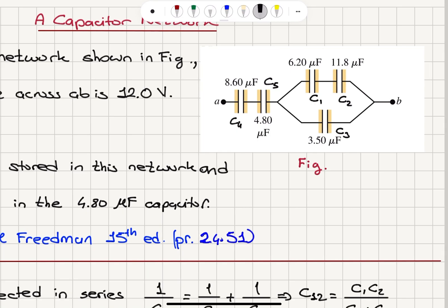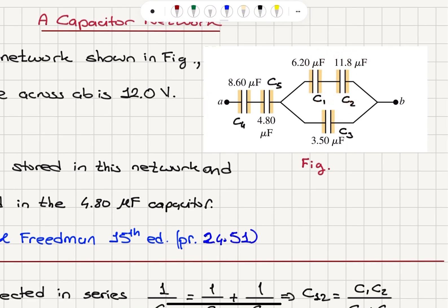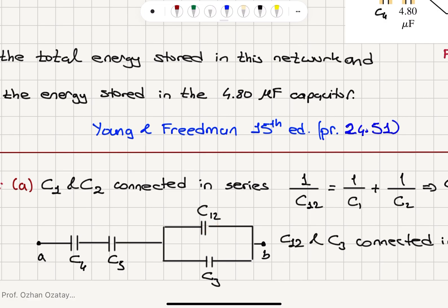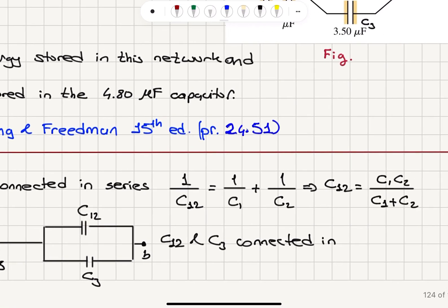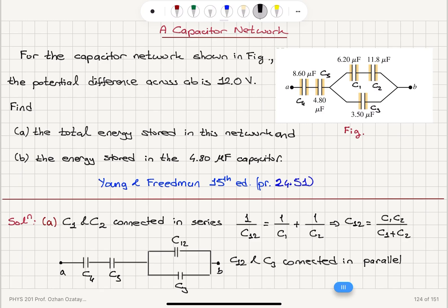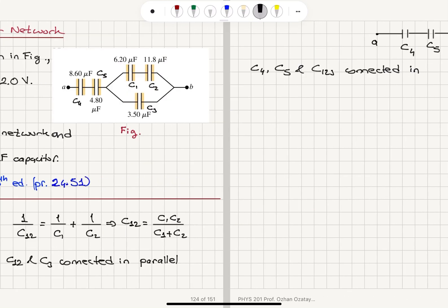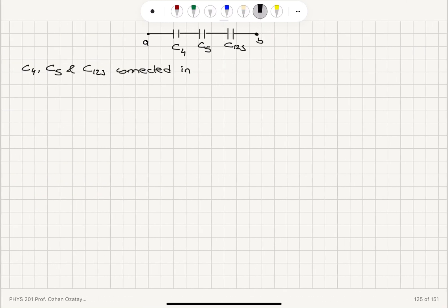Replacing C1 and C2 with C1,2, we now have C1,2 connected in parallel with C3. For parallel capacitances, the equivalent capacitance is found by adding up the individual capacitances. So C1,2,3 is equal to C1,2 plus C3.